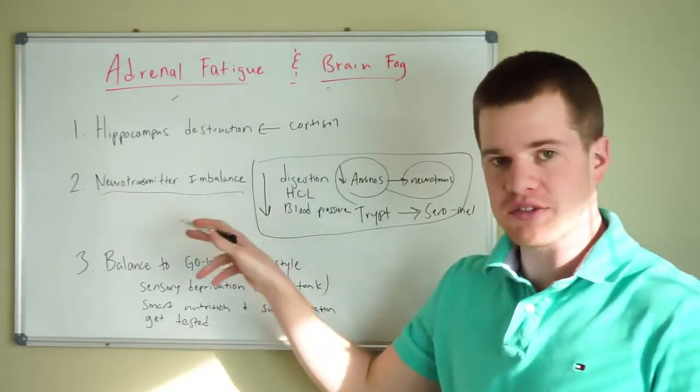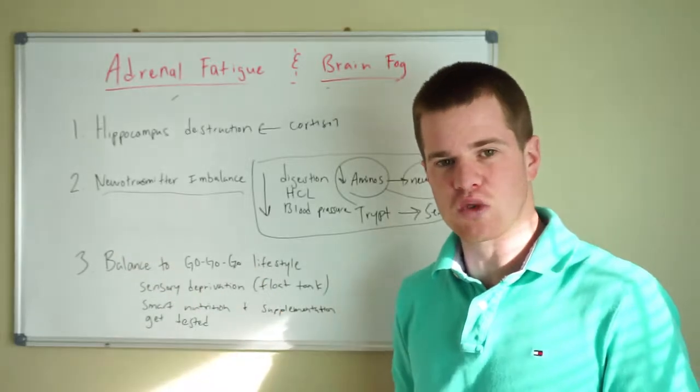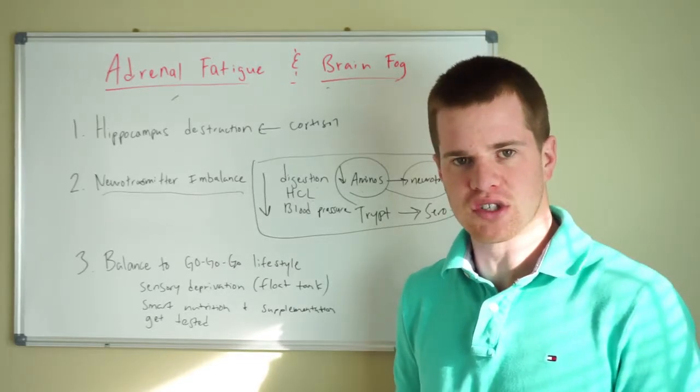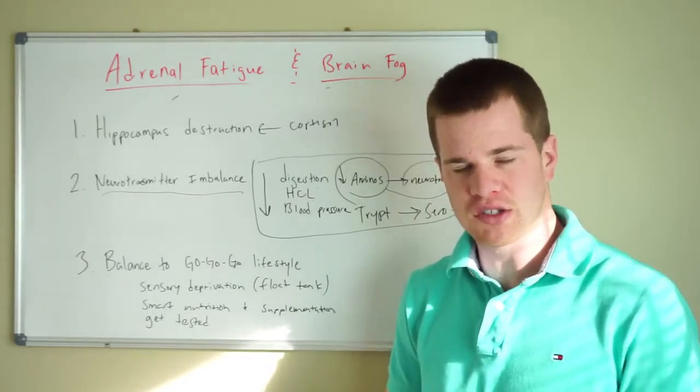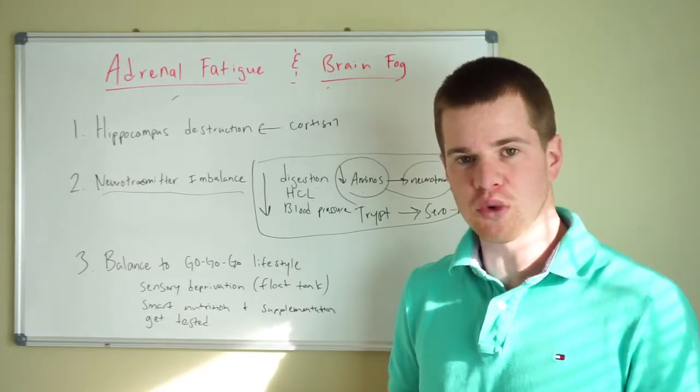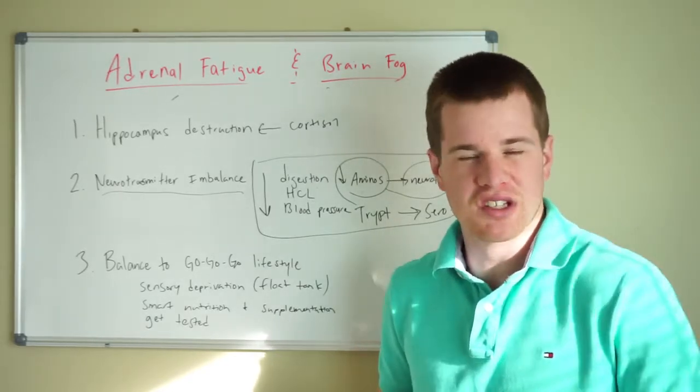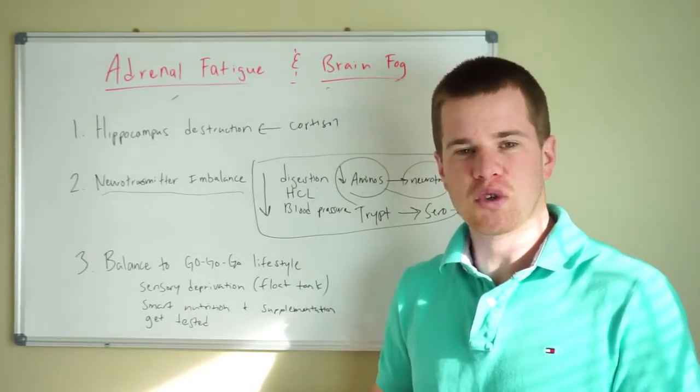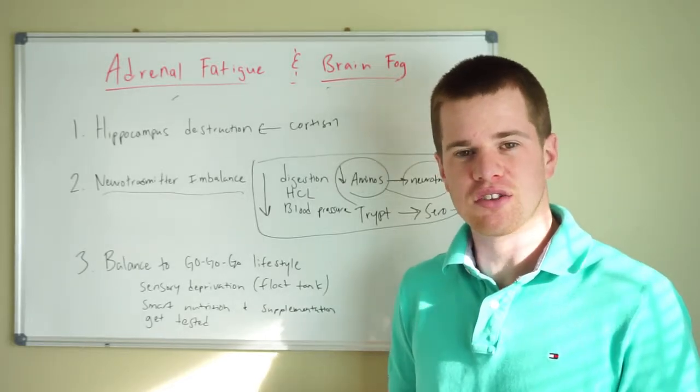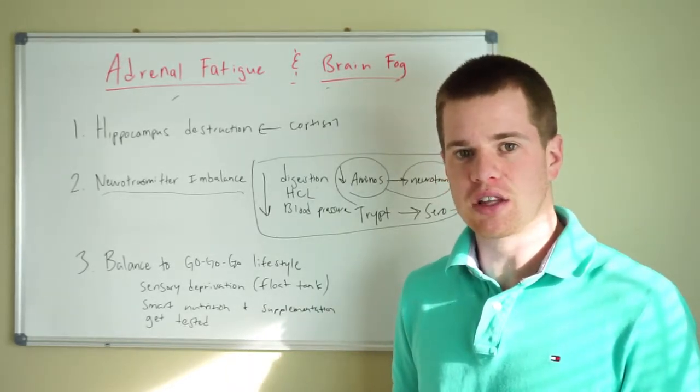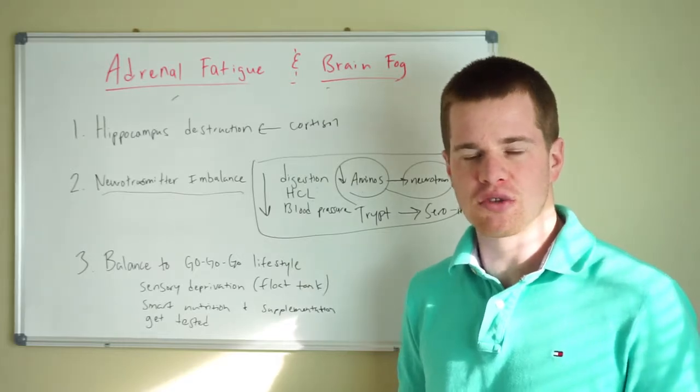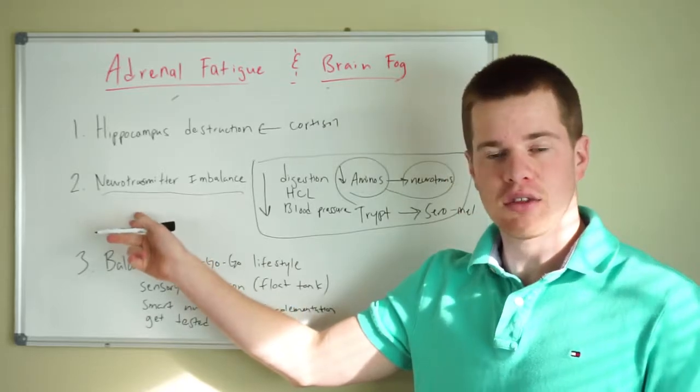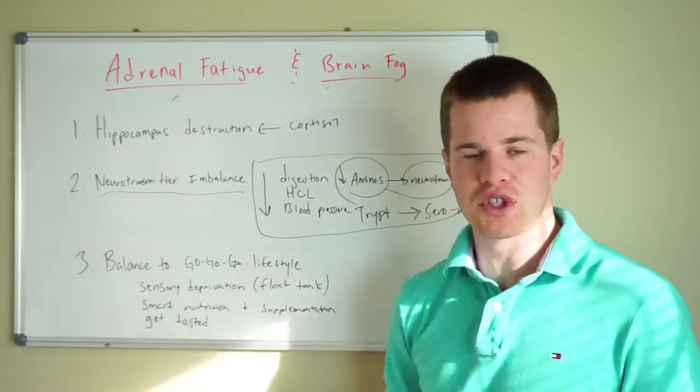Obviously we have neurotransmitter imbalance that can be identified with further testing such as organic acids testing. And then lastly, we want to make sure that there's no type of GI pathogens. Parasites and other gut bugs that you can find in your GI tract with a stool test. If you have a gut bug, say blastocystis hominis, that's a very common one that many people will show up with. That's going to sap your energy and you're going to feel exhausted. And until you address that, you're not likely going to have optimal brain function.